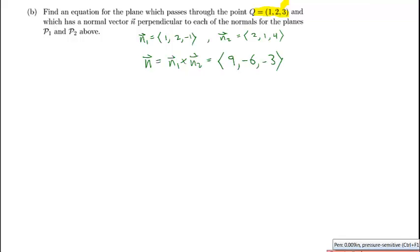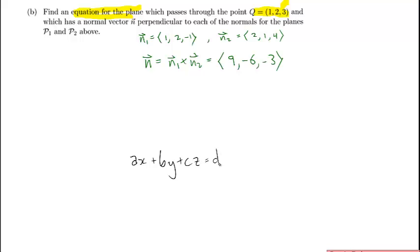We have a normal vector for the plane we're after. Before writing anything down, it's worth asking what the answer will look like. We're asked to find an equation of a plane, so our answer will be something like Ax plus By plus Cz equals D. We need to determine A, B, C, and D so that the plane has the normal we want and passes through the given point.